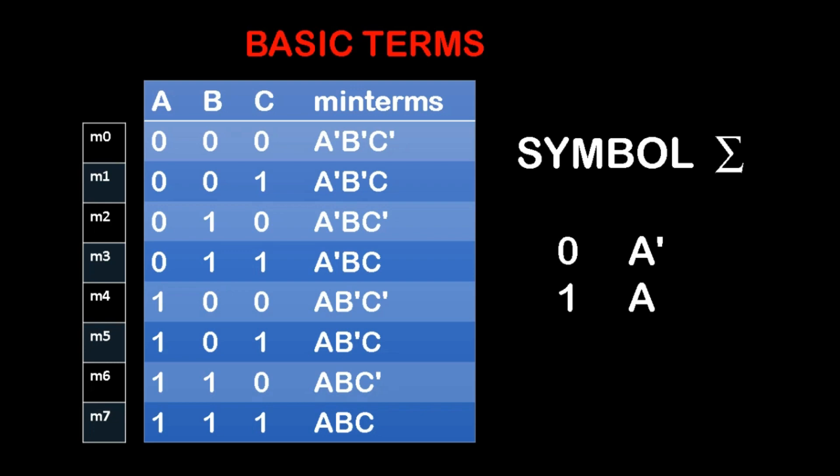For the last value, we don't have any complemented term: 1, 1, 1 — all are the actual terms. It is represented by A, B, C, which is represented by M7. This is the method of writing the min terms — min terms are otherwise called as product terms.